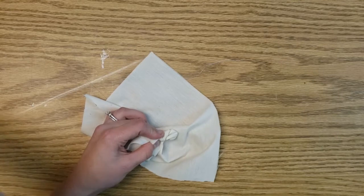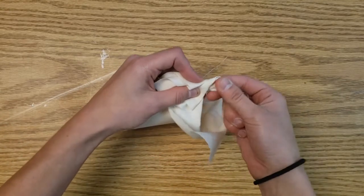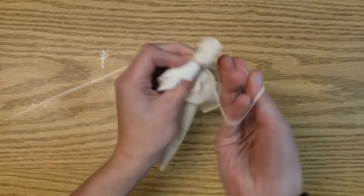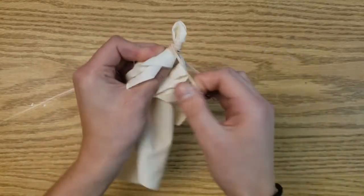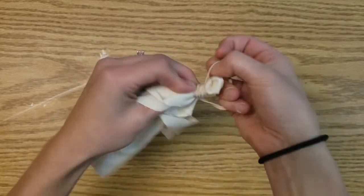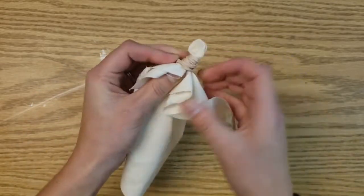After you kind of have like a little ghost, you're going to take a rubber band and go around it lots and lots of times so your rubber band is pretty tight, just like that.